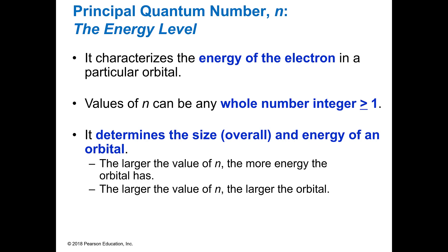So principal quantum number is the energy. It's always going to be a whole number integer, and it determines the size. And as I said, you can look at your periodic table and see your rows. And the first row is n equals 1. The second row is n equals 2, 3, 4, 5, 6, as you go down the rows.